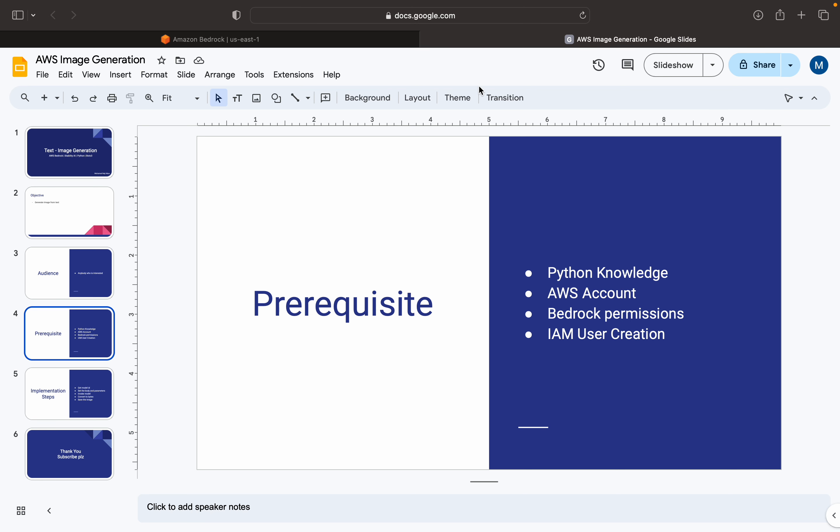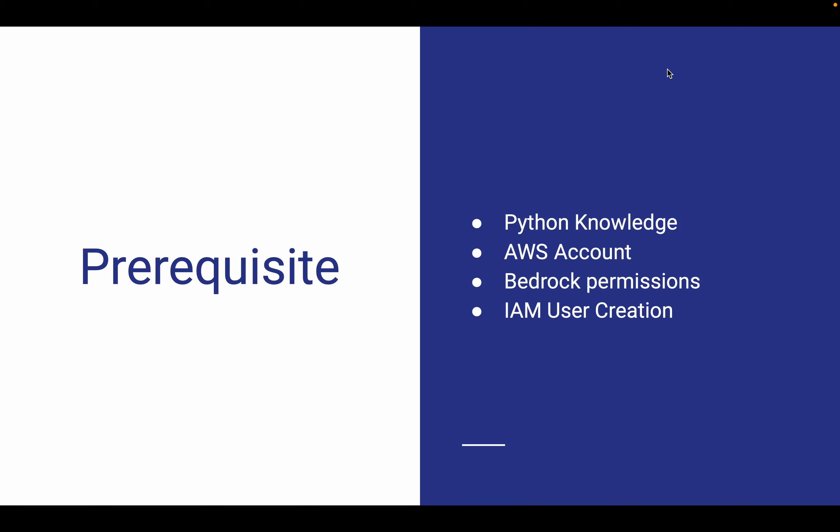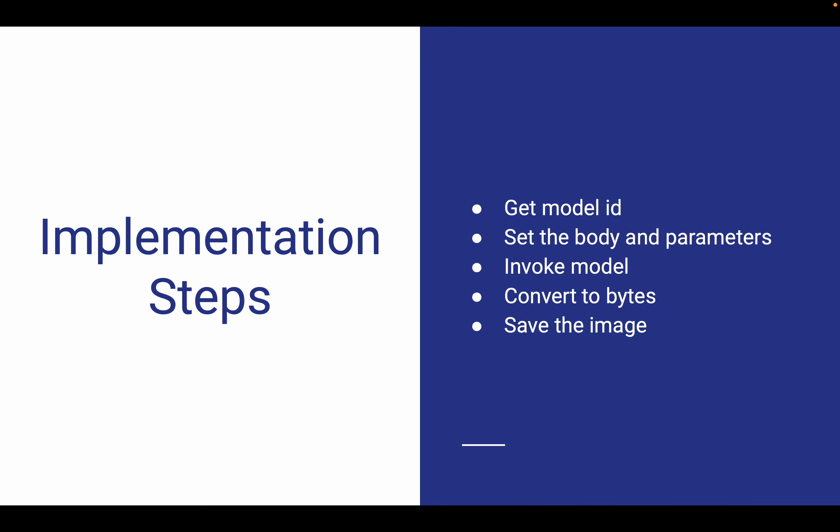Now let me go to the PowerPoint and walk through the implementation steps at a high level. First, we need to identify the model ID. Then we set up the body and parameters. Next, we invoke the model, which returns a JSON structure containing bytes. From that we convert to base64, and finally we save the image.